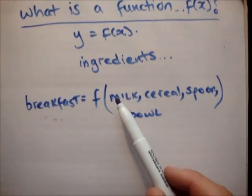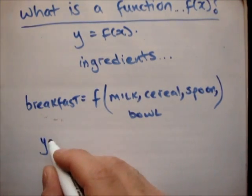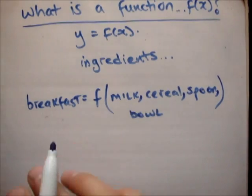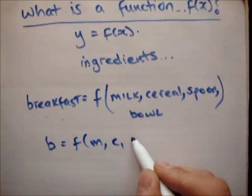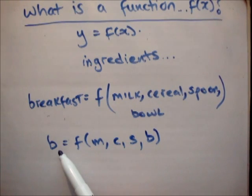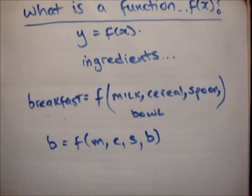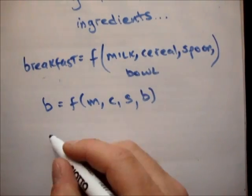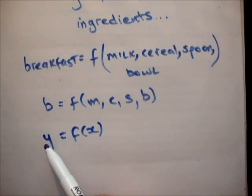Breakfast is a function of milk, cereal, spoon, bowl. In order to get my breakfast or make a breakfast I need milk, cereal, spoon, bowl — that's what that means. So you could also write this as B — breakfast is a function of milk, cereal, spoon, bowl. Breakfast depends on how much milk, cereal, how many spoons, and the bowl — the size of your bowl depends on all those different things. Those are the ingredients for your breakfast.